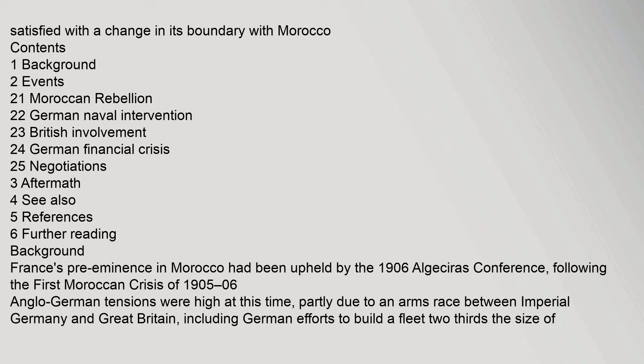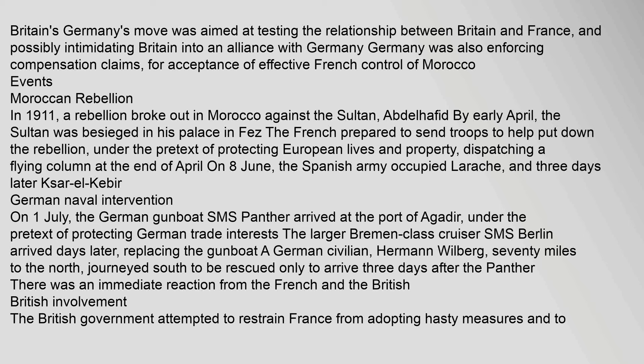France's pre-eminence in Morocco had been upheld by the 1906 Algeciras Conference. Following the First Moroccan Crisis of 1905–06, Anglo-German tensions were high, partly due to an arms race between Imperial Germany and Great Britain, including German efforts to build a fleet two-thirds the size of Britain's.